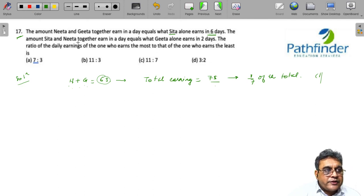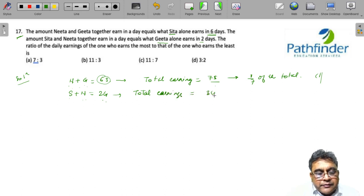Second, the amount Sita and Neeta together earn in a day equals what Geeta earns in two days. Sita plus Neeta in one day will be what Geeta earns in two days. Which means if Geeta earns G amount in one day, Sita and Neeta in one day will earn 2G. Their total earning in terms of Geeta's earnings will be 3 times G, which means Geeta earns 1/3rd of the total.